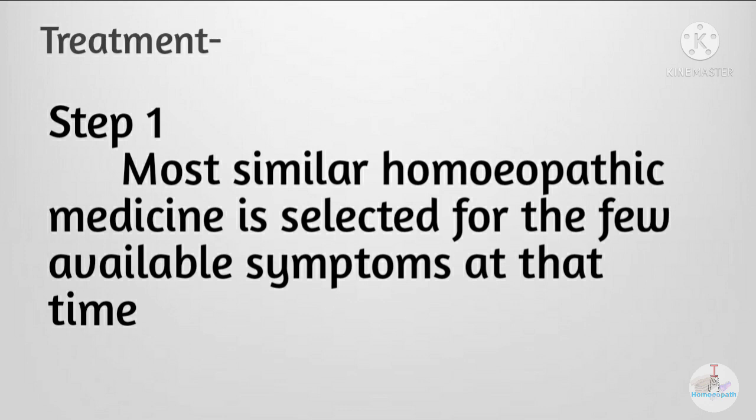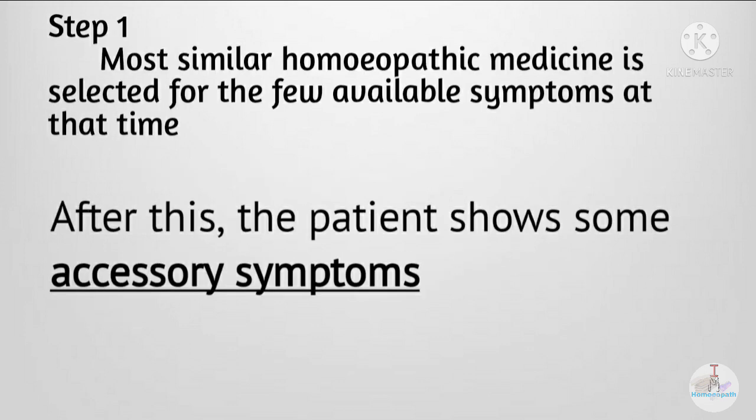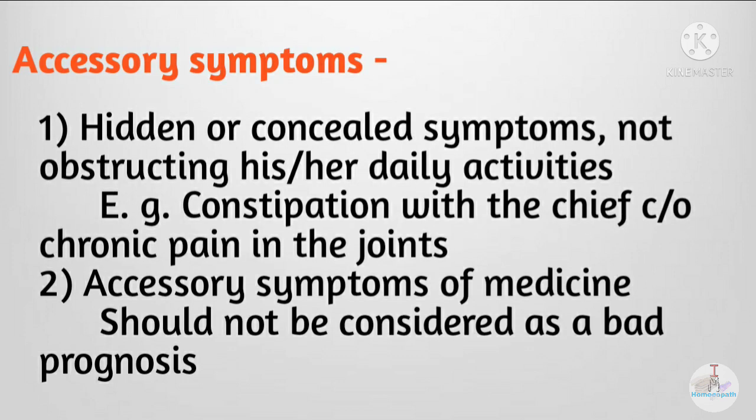Now the treatment of one-sided diseases: based on whatever symptoms are available at that time, the most similar homeopathic medicine is selected and prescribed. This is also called a partially selected homeopathic medicine. After this, the patient shows some accessory symptoms.